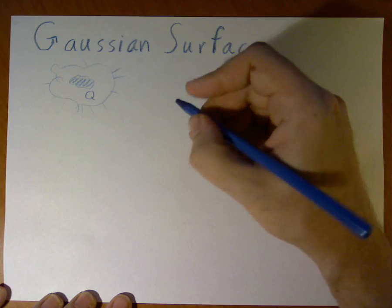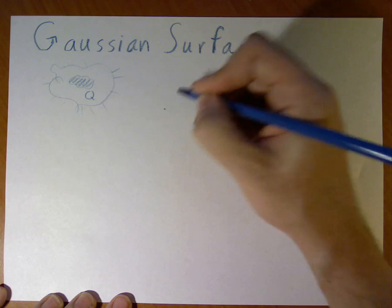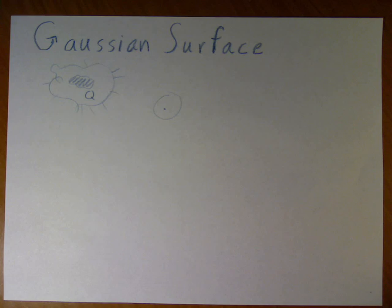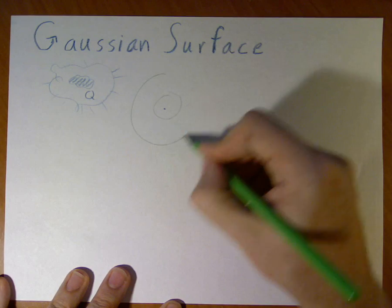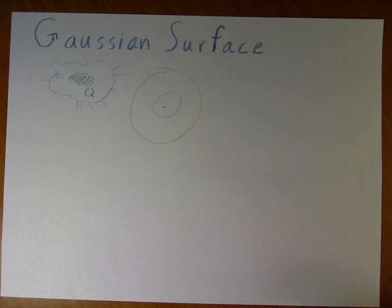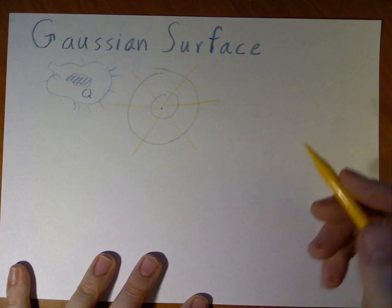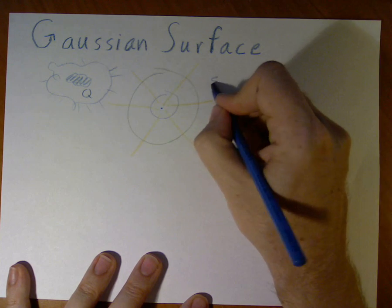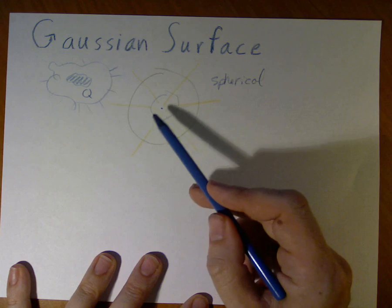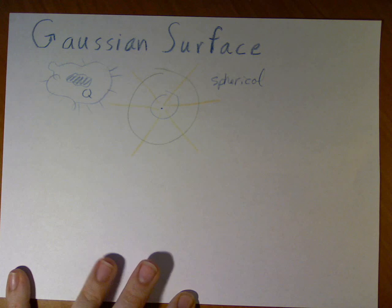The cases where it's useful include cases of spherical symmetry, such as a point charge or a sphere, in which case our Gaussian surface will also be spherical. The lines of force going through it all come out with spherical symmetry. So a spherical surface is what we typically use with a point or sphere charge, because we want to keep this simple.